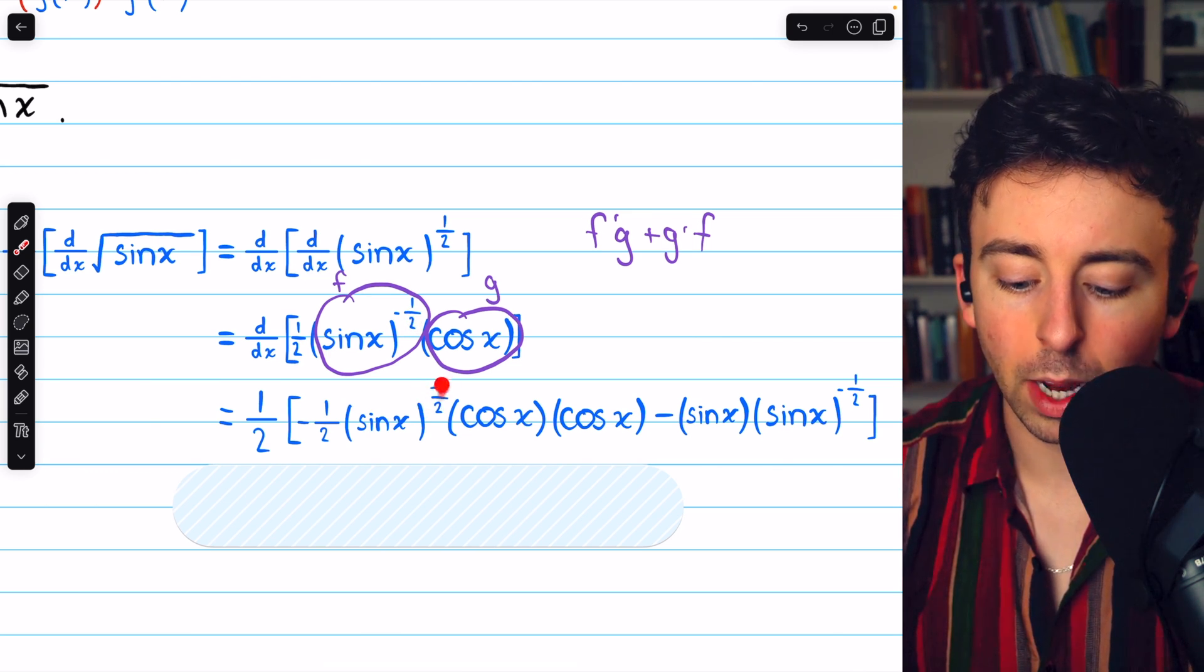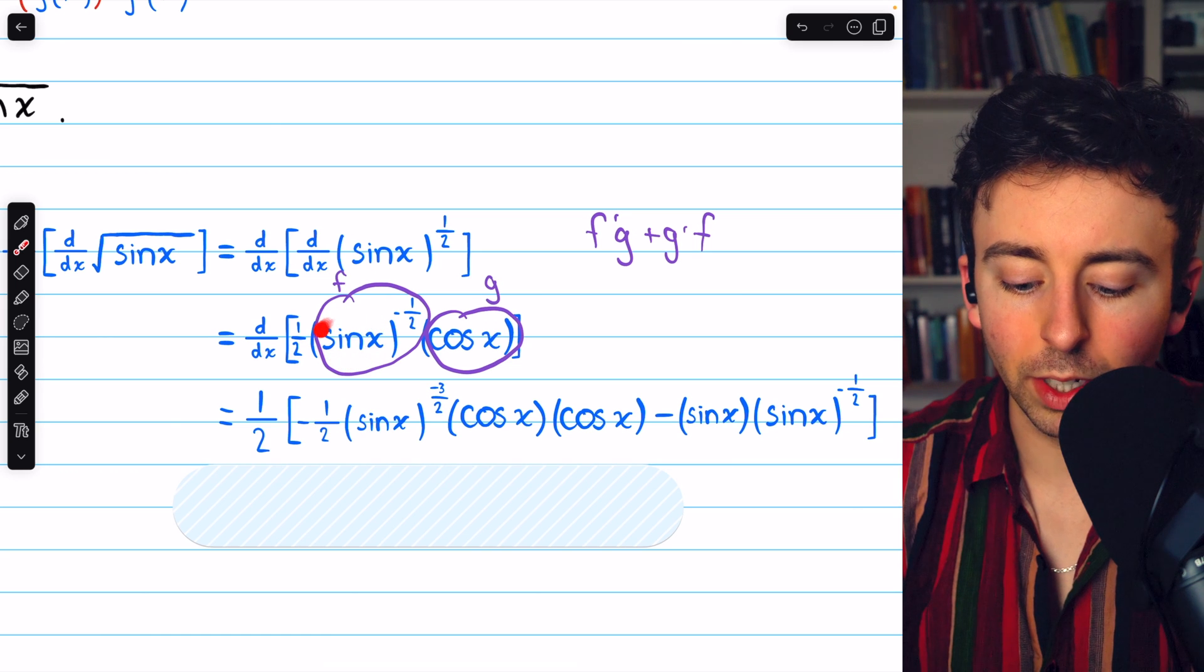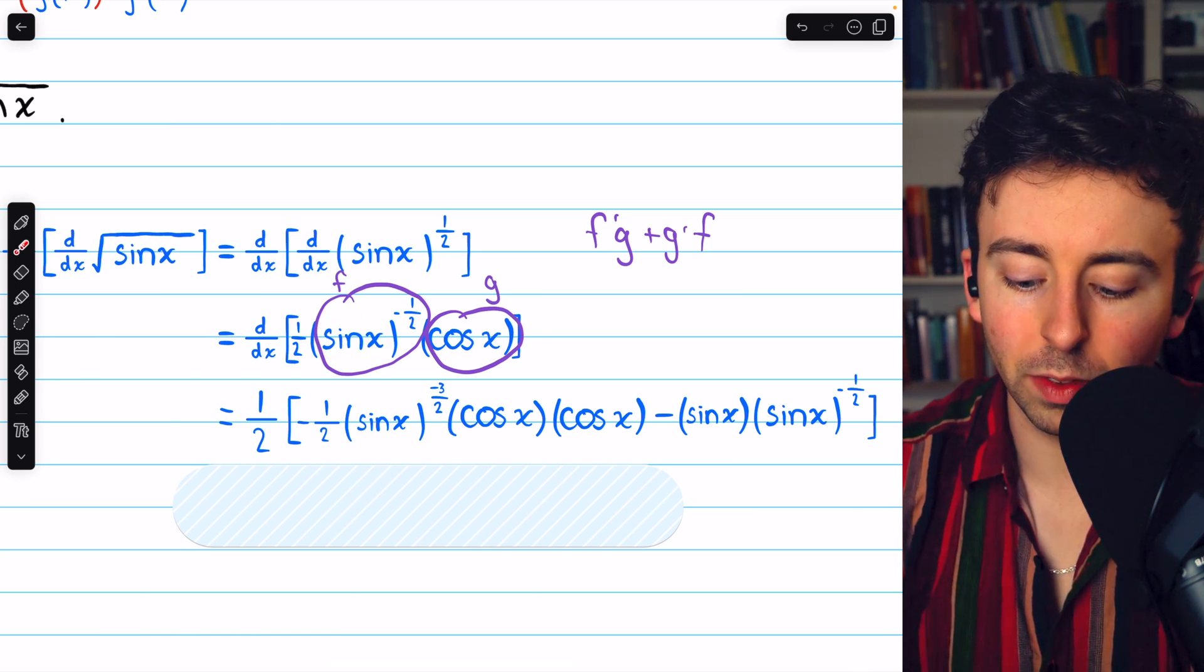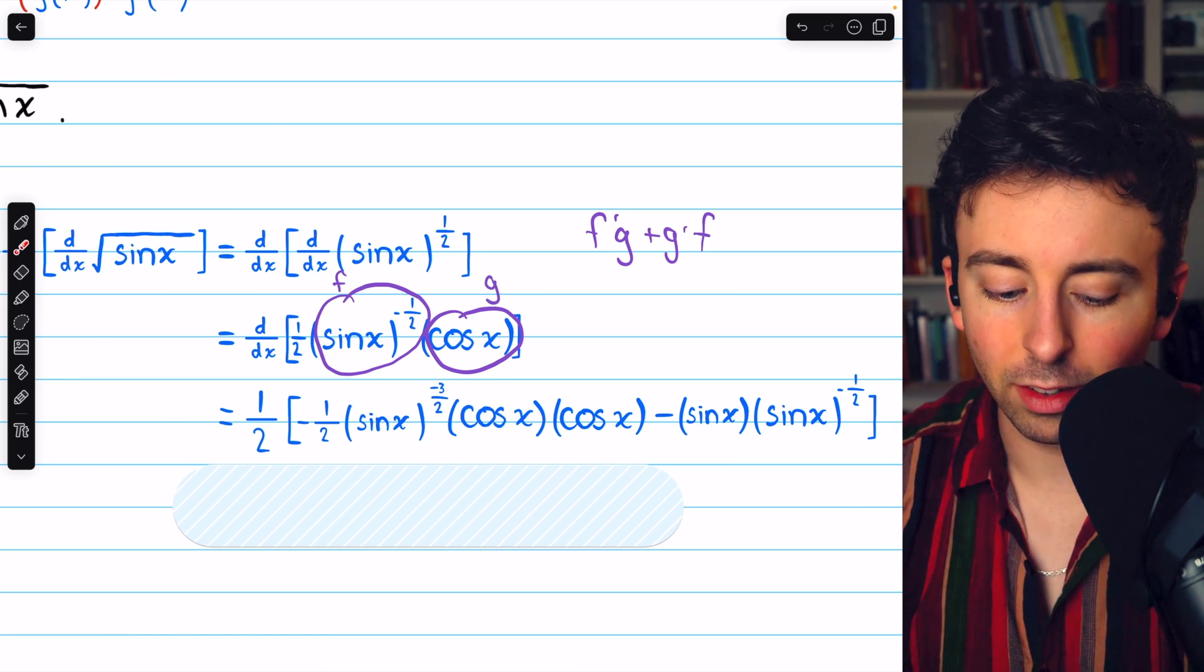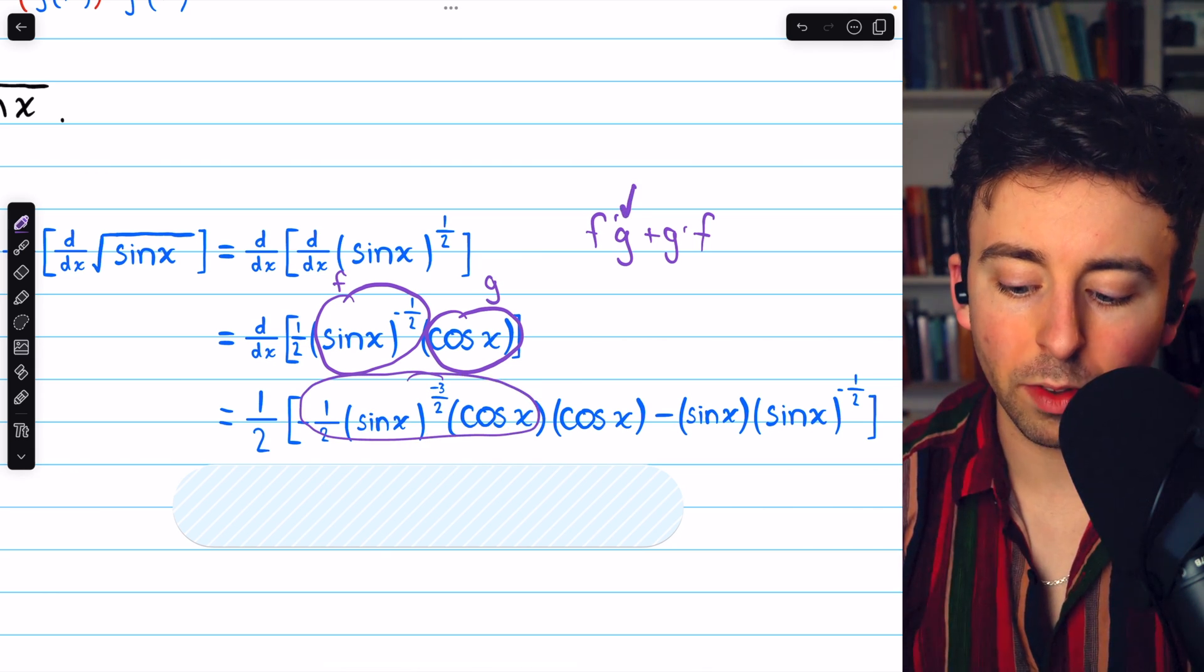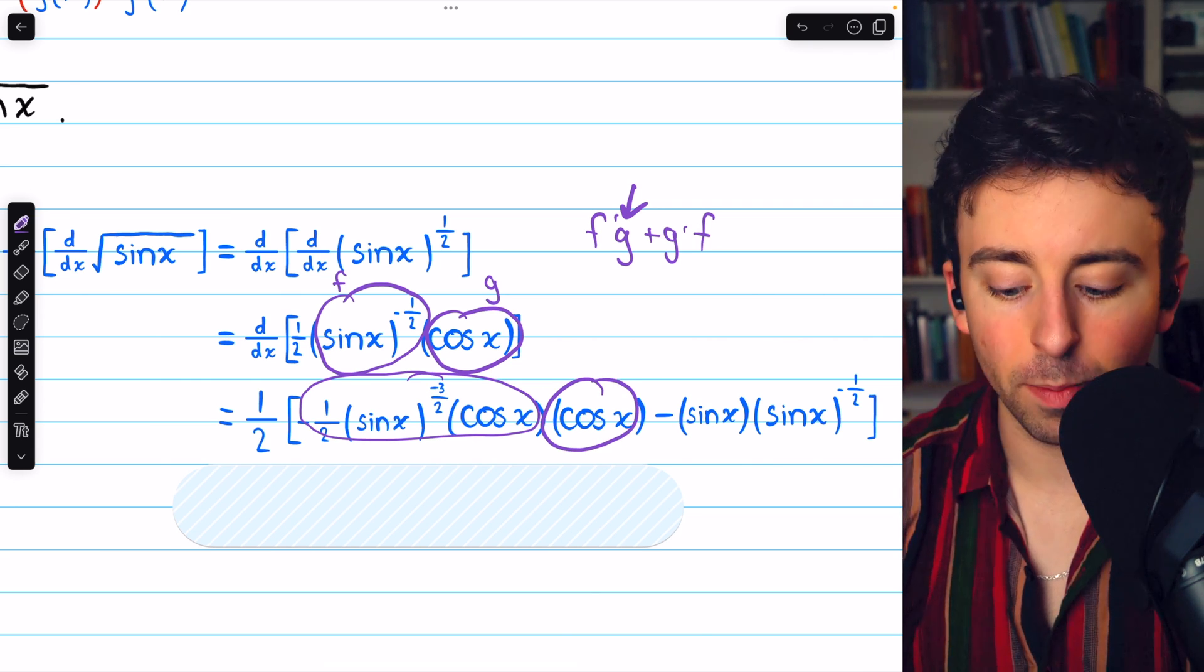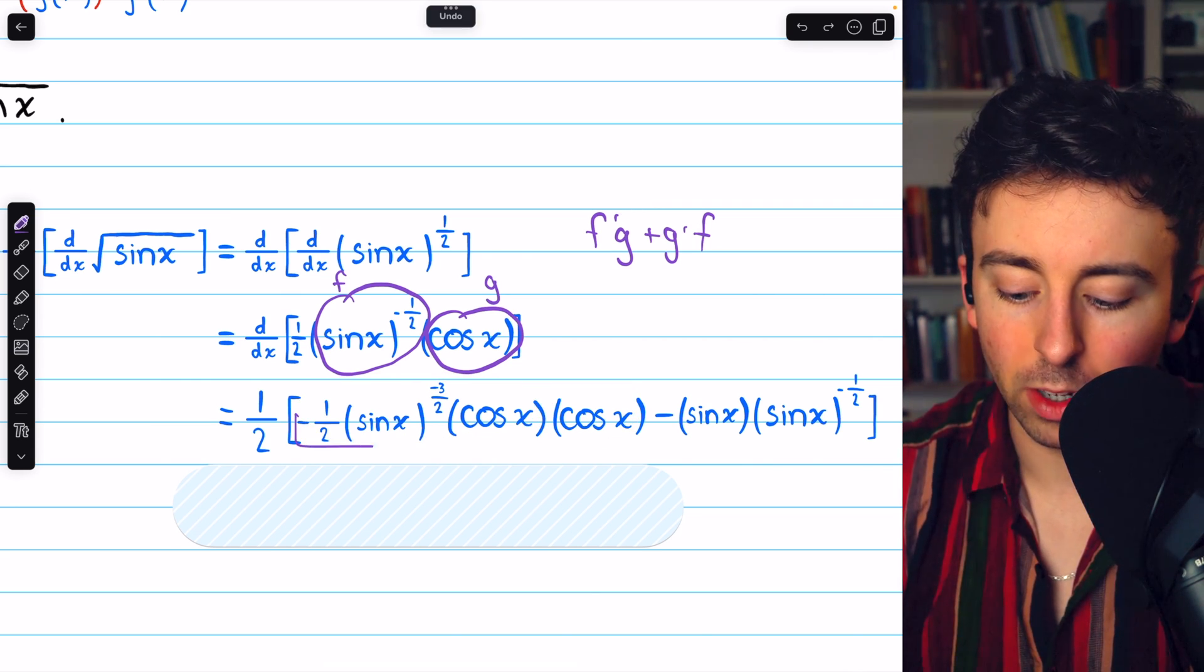and then reduce the power by one, so now negative three-halves. But then you've got to multiply by the derivative of the inside function, the derivative of sine x is cosine x. So all of this is f prime, but we also have to multiply by g, hence we have another factor of cosine there, so that's f prime g.